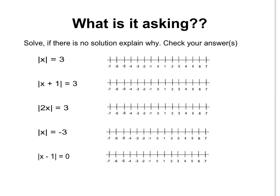Before we look at the steps for solving, let's think about what each of these is actually asking. The first one says the absolute value of x is 3. That means what number, or numbers, is 3 units away from zero? So if I have zero here, then I know that I could either move 3 units to the right or 3 units to the left. So my solutions are 3 and negative 3. You can also write it as {3, -3} — that's the solution set.